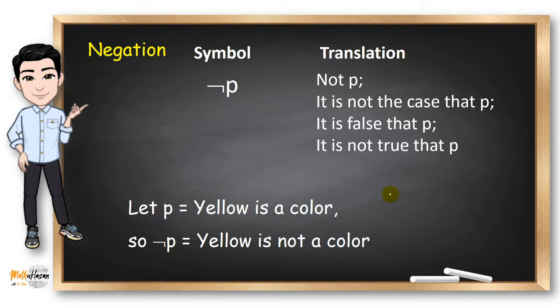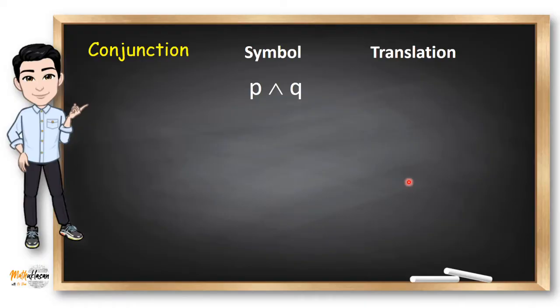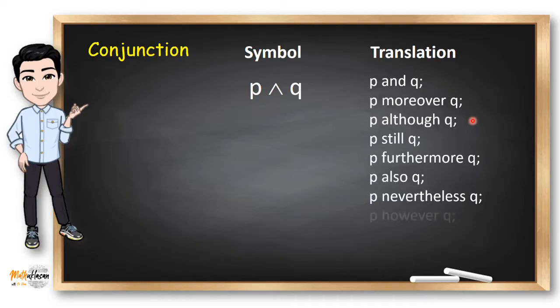And before I forget, some teachers and students prefer using this curvy line to represent negation P. Conjunction is written in symbols like an arrowhead that points to the north. It can be read as P and Q, P moreover Q, P although Q, P still Q, and so on.